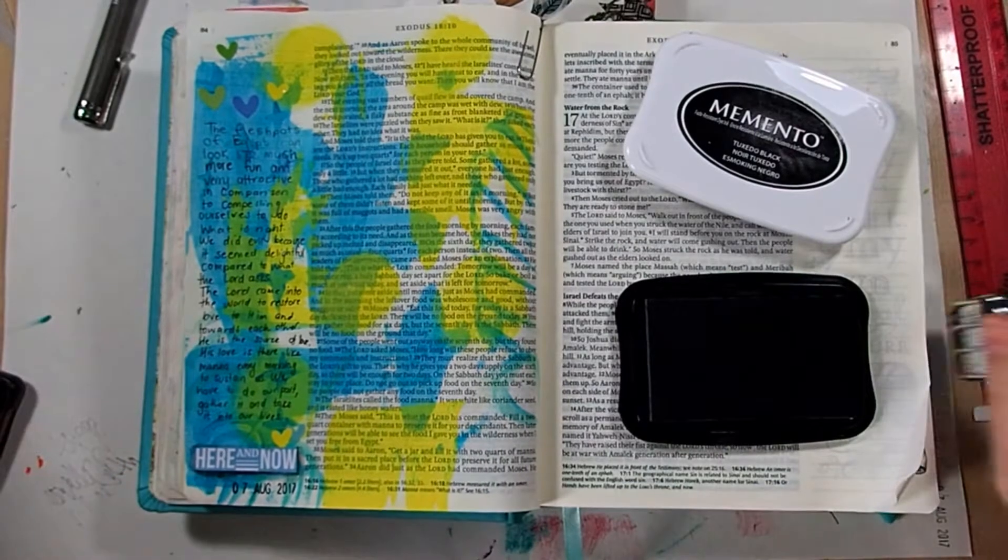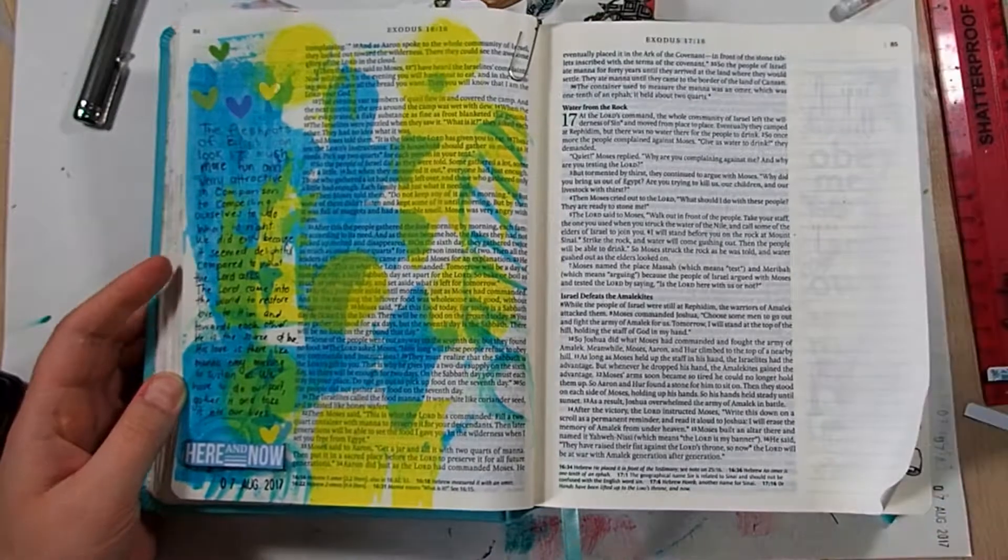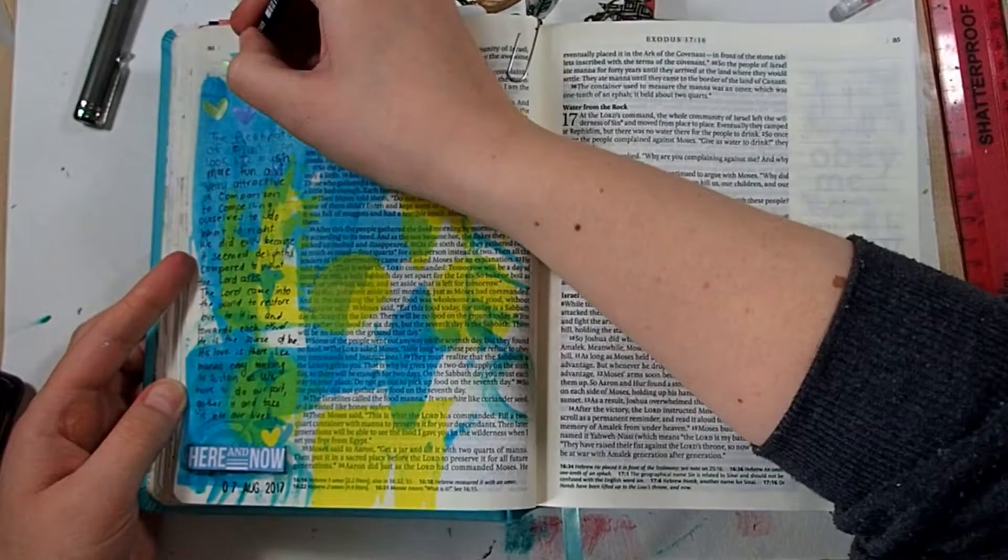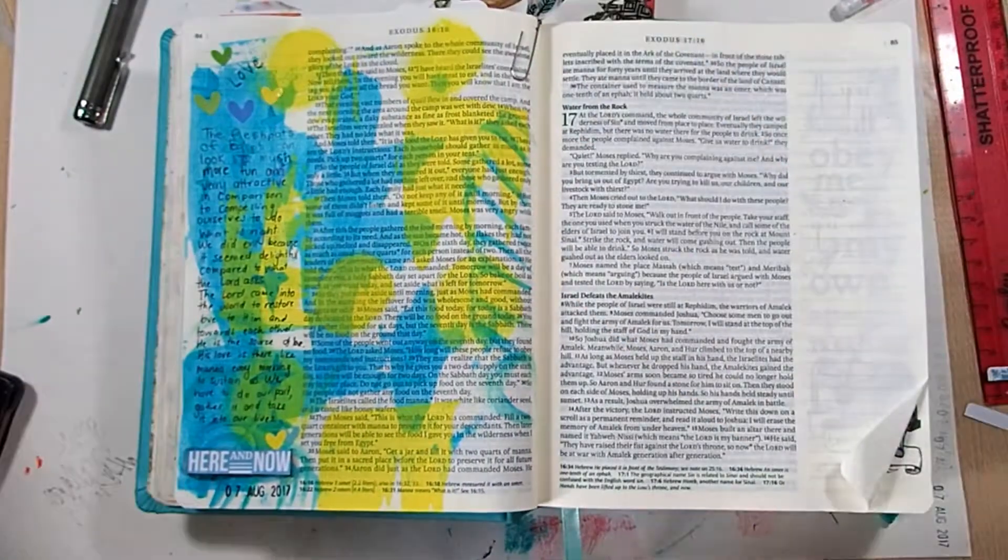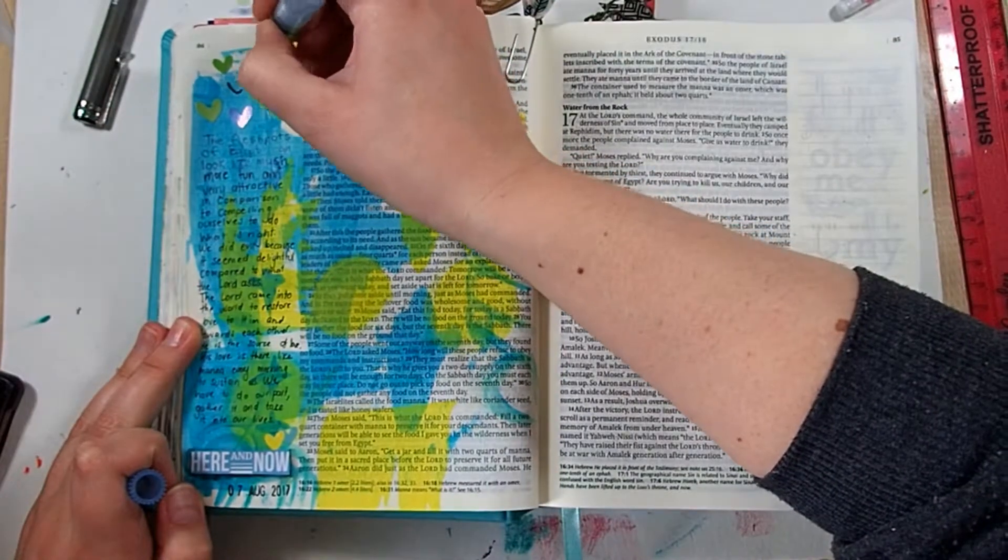So now I'm just putting down the dates, so I can remember when I did this piece. And I'm just going to write the word love up there, because that's just to remember that God loves us, and that's why this is happening.